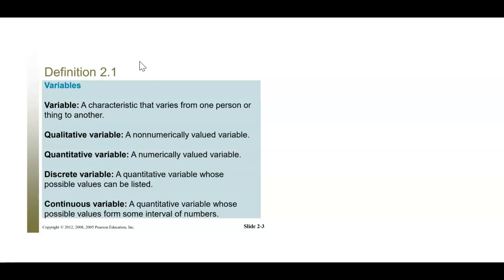Qualitative variables are your non-numerical value variables. These are things like hair color, eye color, political party — anything that is descriptive.